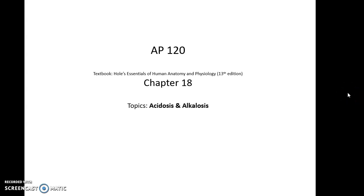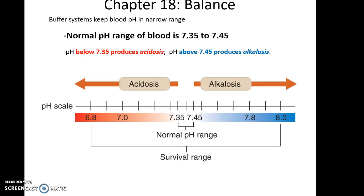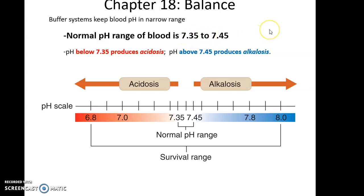AP 120, Chapter 18. Topics: Acidosis and Alkalosis. We've been talking about blood pH. The normal range for blood pH is 7.35 to 7.45 — important numbers to remember.